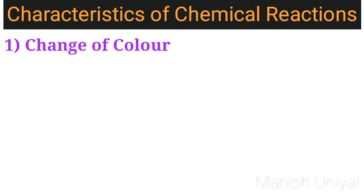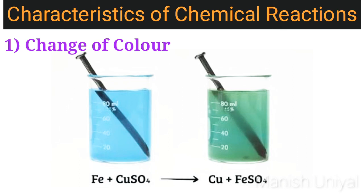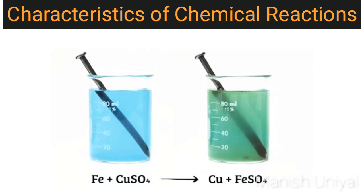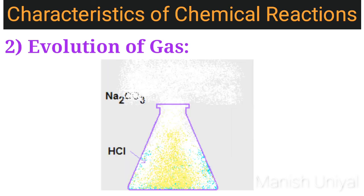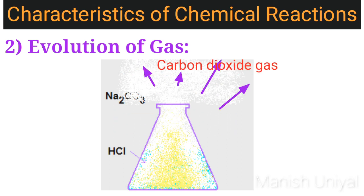Characteristics of chemical reactions. The first one is change of color. In some chemical reactions, a change of color takes place when reactants form the product. For example, when a piece of iron is dropped into a blue solution of copper sulfate, its blue color slowly changes into light green and a red substance is also formed. The second characteristic is evolution of a gas. In some reactions, one of the products is a gas which can be recognized by effervescence, bubbles, smell, or color. For example, when dilute hydrochloric acid is added to solid sodium carbonate, a strong effervescence is observed indicating evolution of carbon dioxide gas.